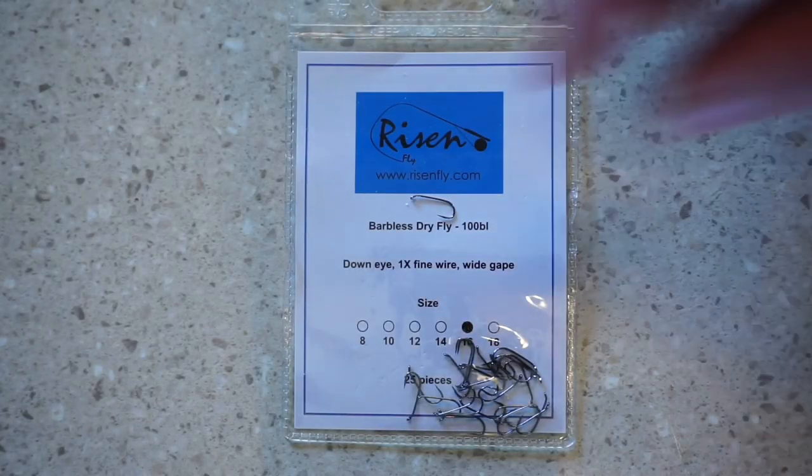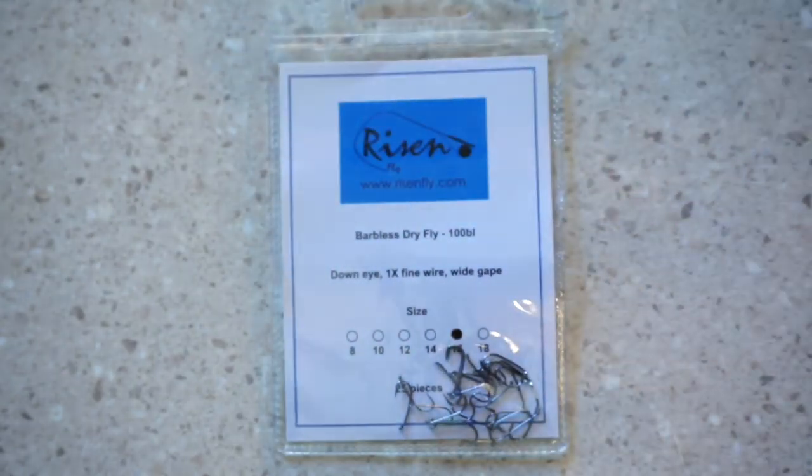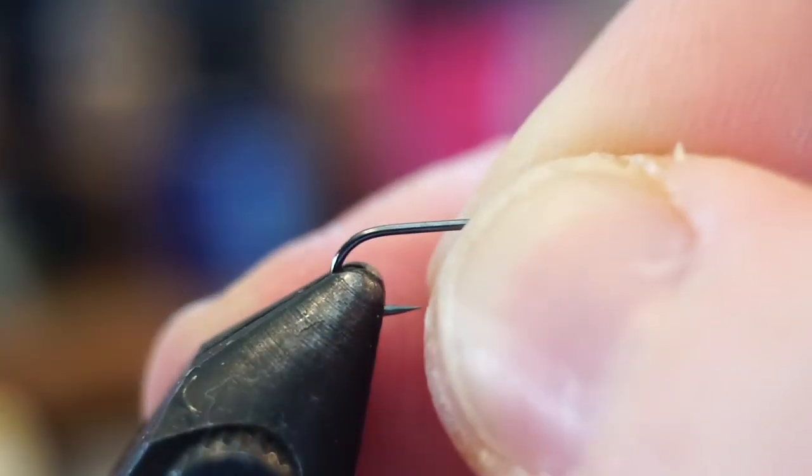To start this off, we need a dry fly hook, and I really like these Risen barbless dry fly hooks. Today I'm tying size 16. Secure the hook in your vise.